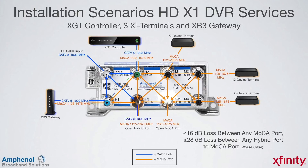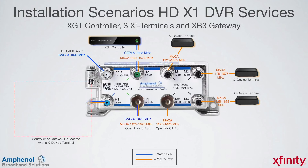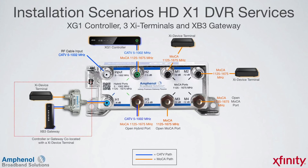It's good engineering practice to terminate any unused ports. Since the input port is isolated from the MOCA frequencies, no MOCA frequencies will exit the input port. In installations where the controller or gateway are co-located with an XI device terminal, you can add an external splitter at that location. Feed the outlet from the blue H1 port — since this is a low-loss 4 dB port, by adding the splitter the loss is balanced out to about the same as it is to the devices on the H2 and H3 ports.